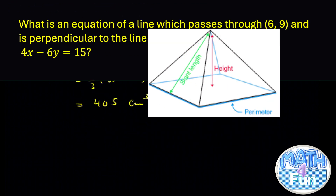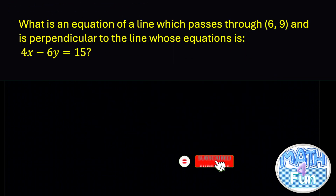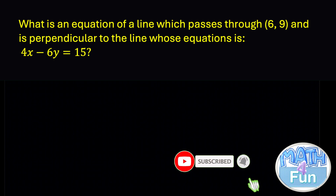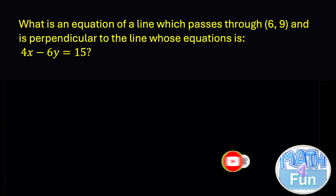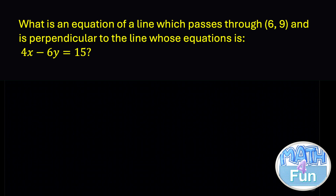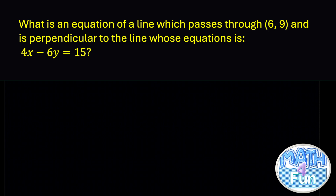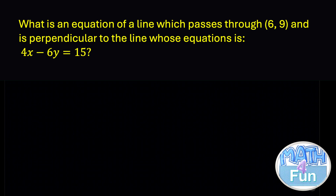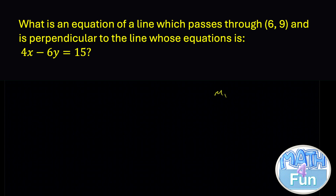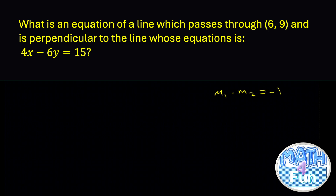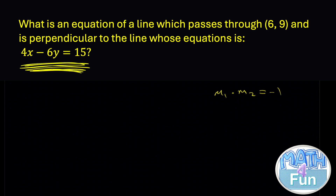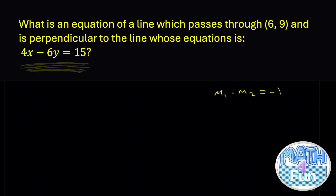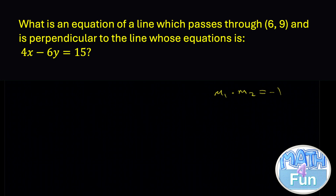Another question: what is the equation of a line that passes through the point (6, 9) and is perpendicular to the line 4x - 6y = 15? When two lines are perpendicular, the product of their slopes equals -1: m₁ × m₂ = -1. So we need the slope of the given line first.